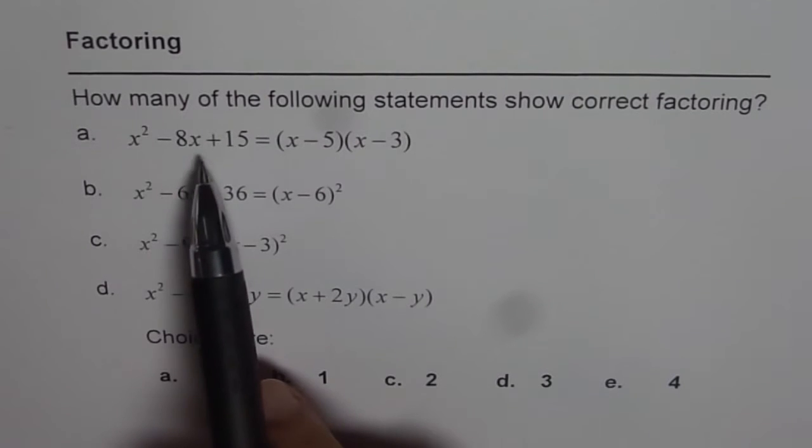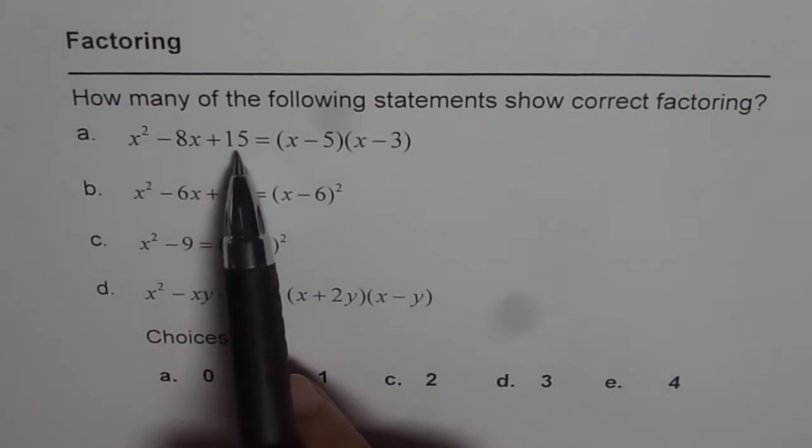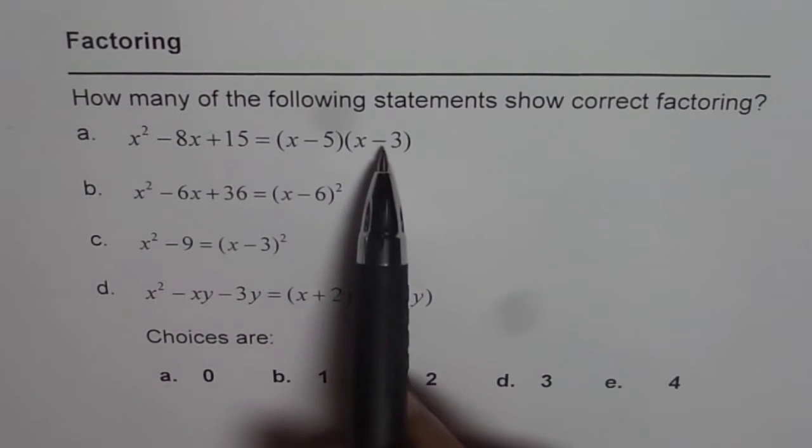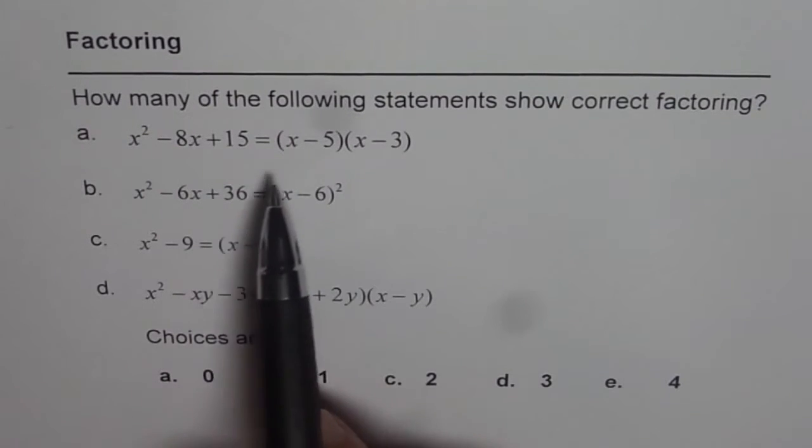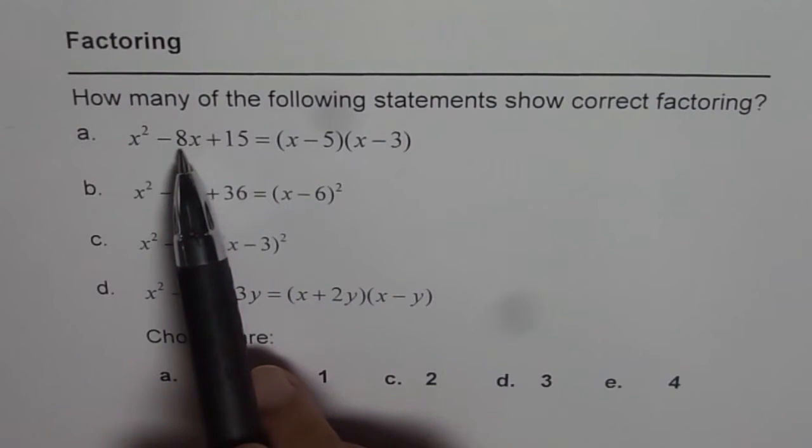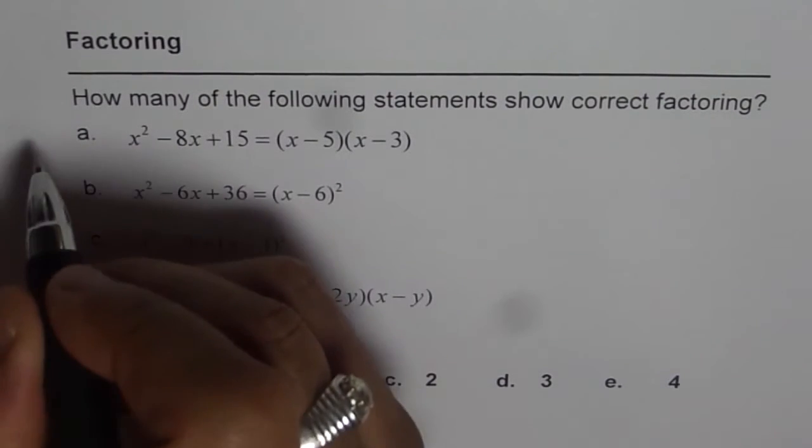When you are looking at the first statement we need product of 15 and sum of minus 8. And of course minus 5 times minus 3 is plus 15. And when I add minus 5 and minus 3, I do get minus 8. So this is true.